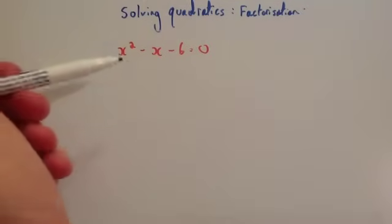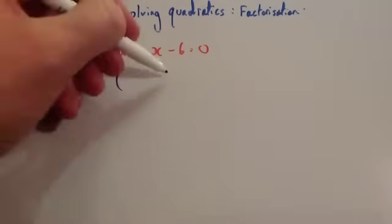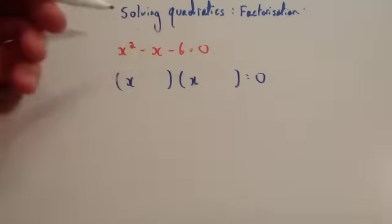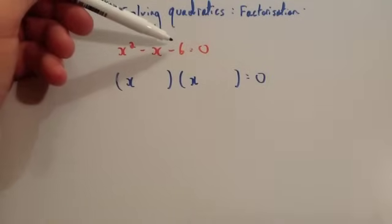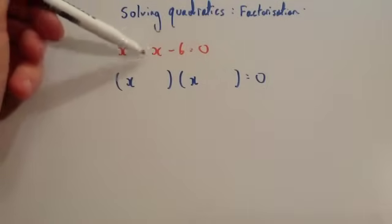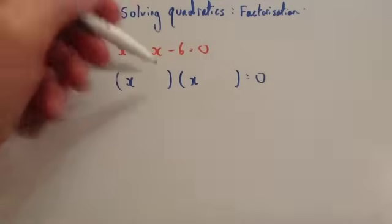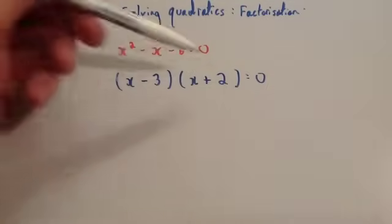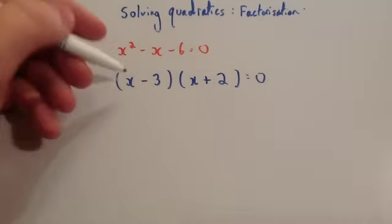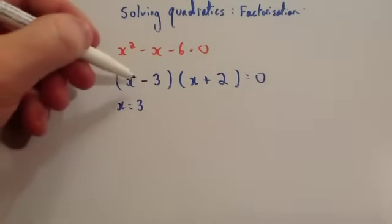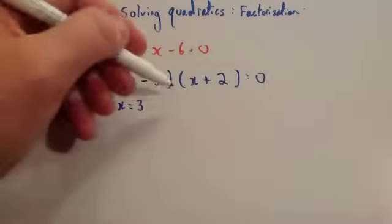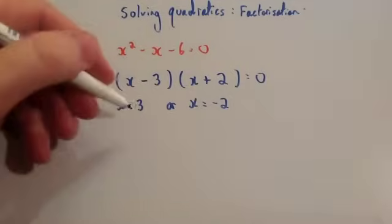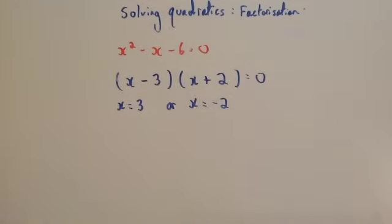This time we're going to solve x squared minus x minus 6 equals zero. Put your two brackets down with x at the front of both, and set it equal to zero. The two numbers must multiply to give negative 6 and add to give minus 1, so that's minus 3 and plus 2. Minus 3 times 2 is minus 6, and minus 3 plus 2 is minus 1. So the solutions are x equals 3 or x equals minus 2.